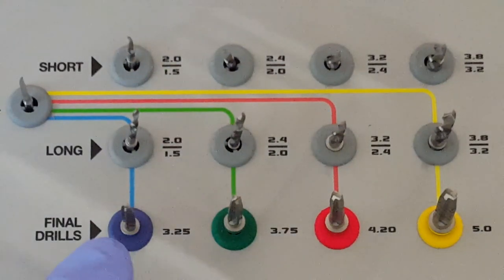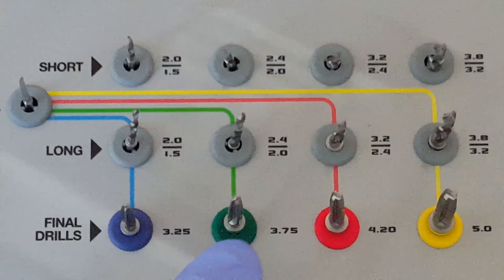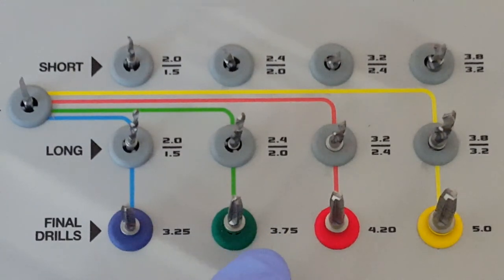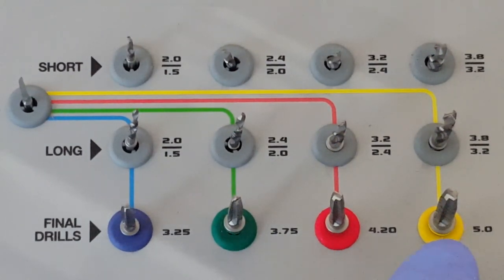The blue color and 3.25 millimeter implant has a unique narrow platform. And the green 3.75 millimeter, red 4.2 millimeter diameter, and 5 millimeter yellow color all have the same standard platform and are all compatible with this, and utilize the same prosthetic components.